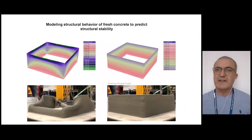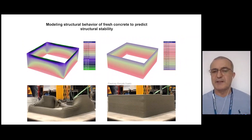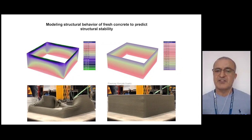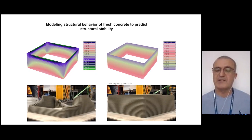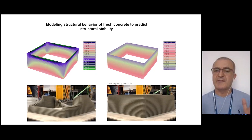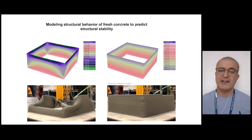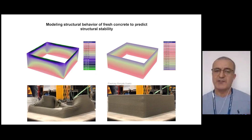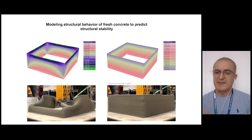You need to understand how the material behaves structurally during the printing process. Existing software checks structural performance of concrete in the hardened state, but we have no software for fresh-state concrete during extrusion — that is exactly the type of software we are developing. This software predicts whether a shape is printable and whether the material acquires enough strength to remain in place. On the left we designed a part that the software predicted would collapse — and it did collapse as predicted. On the right, a shape predicted not to collapse — and it did not.